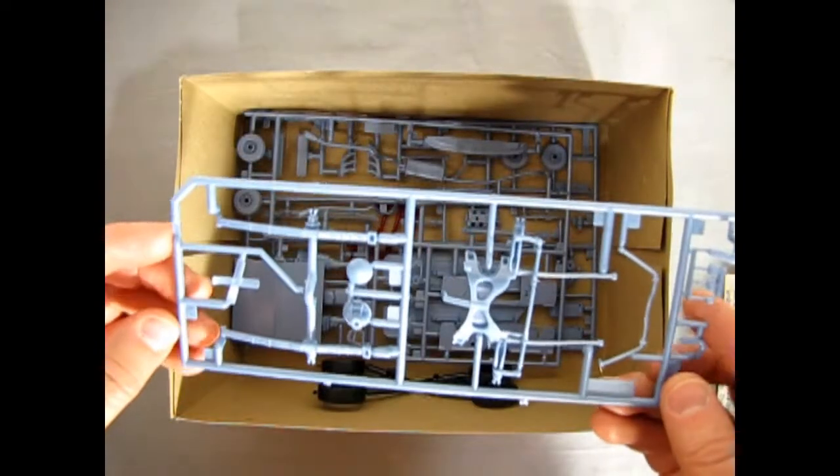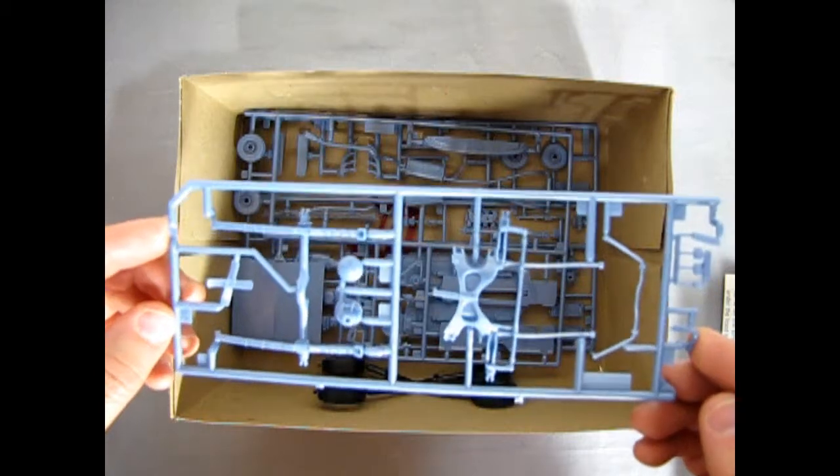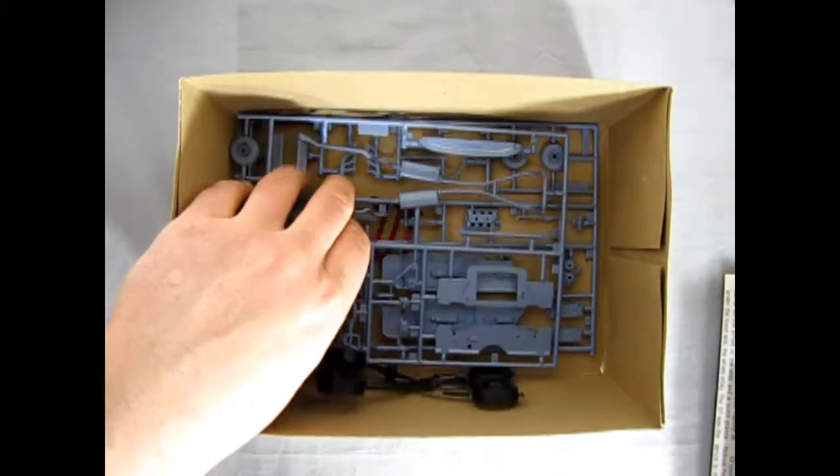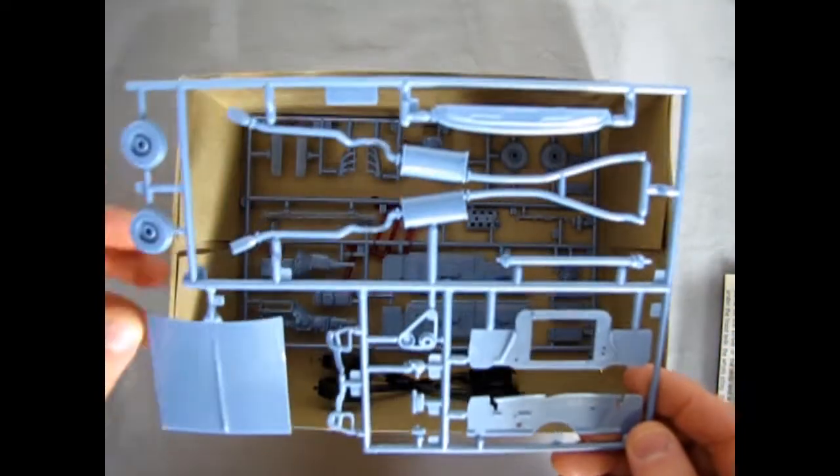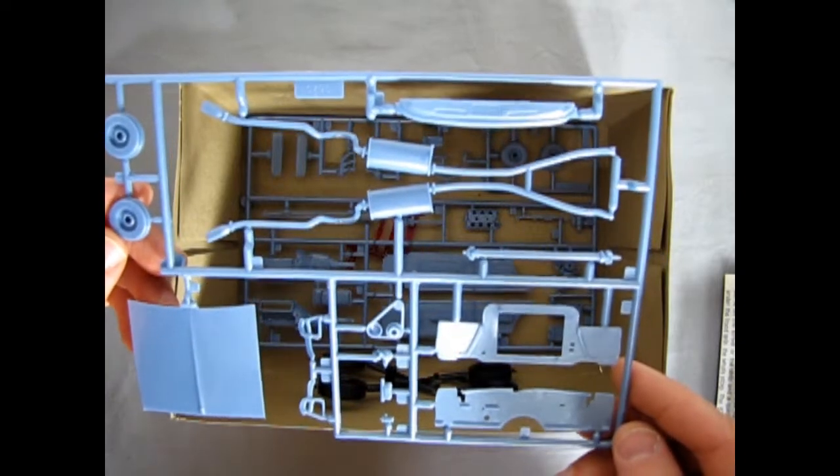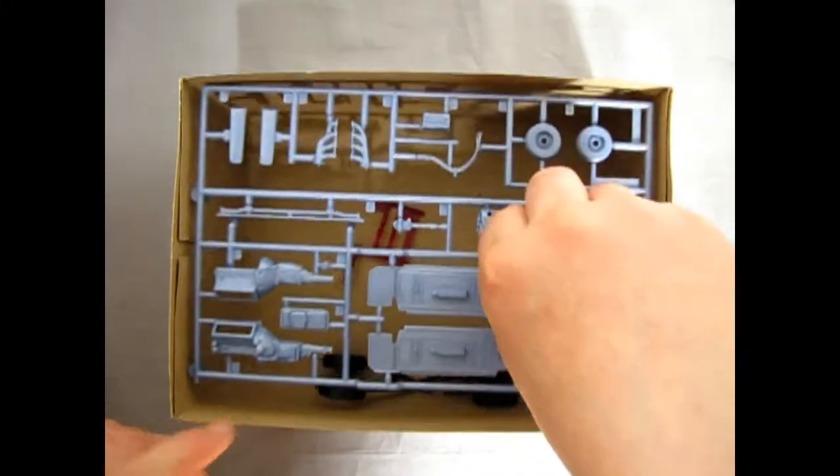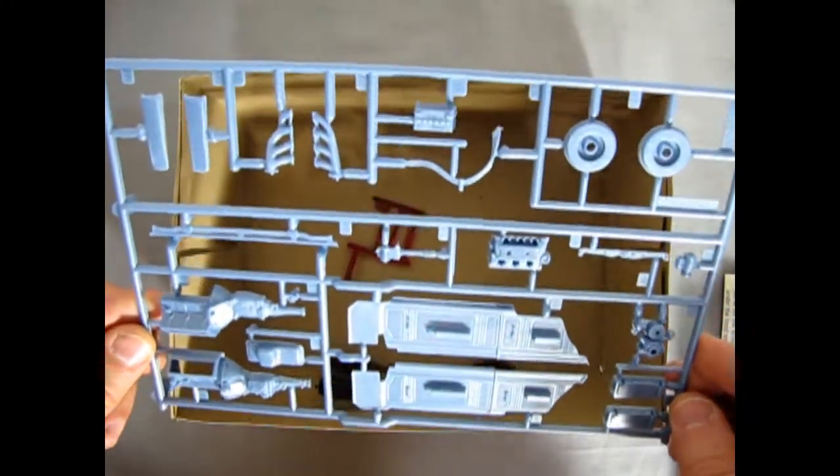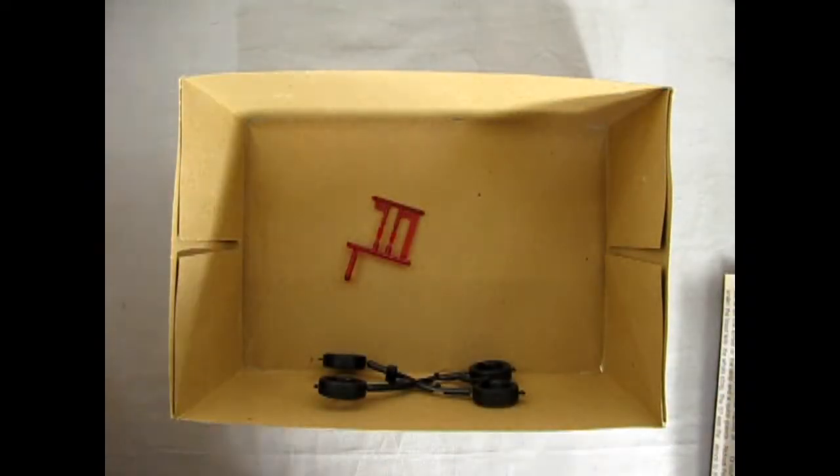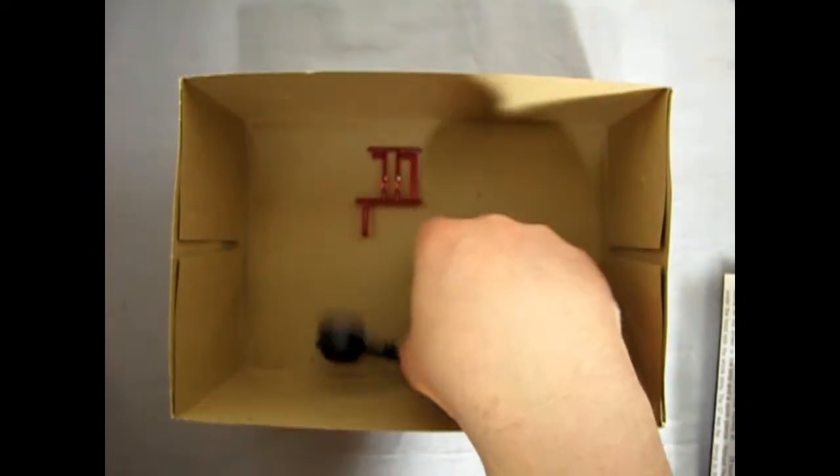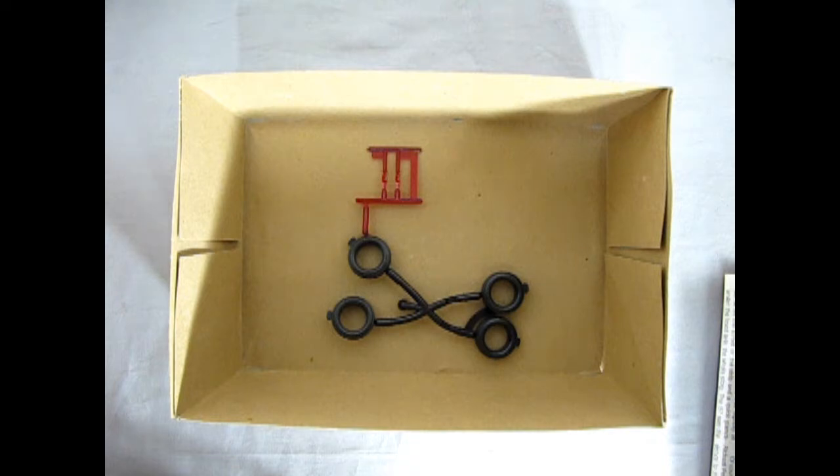Number three would be our suspension components and whatnot. Then we have all the hood and underhood details, as well as a top of dashboard. And then interior panels and engine blocks. The battery and whatnot. We've got our rear tail lights and our tires. So let me clear this out of the way. And we'll start looking at the instruction sheet.